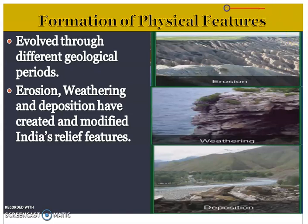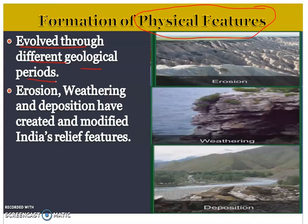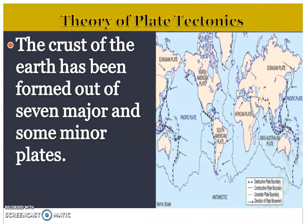How have these physical features been formed? The physical features of India have evolved through different geological periods. During the process of their formation, they have been given their present form by erosion, weathering, and deposition.